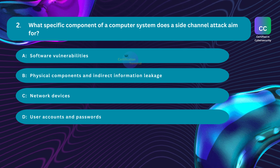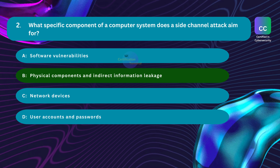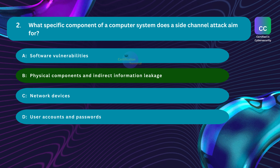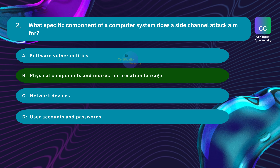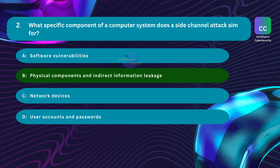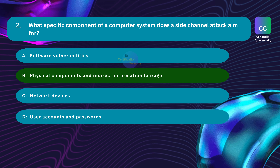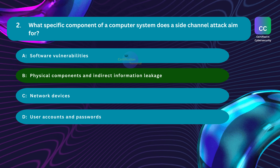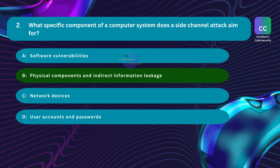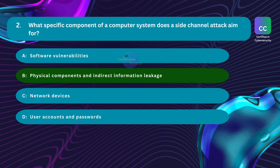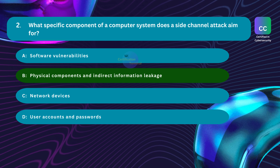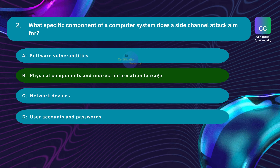The correct answer is Option B: physical components and indirect information leakage. Side-channel attacks are a crafty means of breaching security by exploiting the inadvertent information leakage from a system's physical components. These attacks don't directly target software vulnerabilities but rather capitalize on the unintended side effects of a system's operation, such as power consumption patterns, electromagnetic emissions, or timing discrepancies. They are particularly insidious because they take advantage of the physical properties of hardware or the environment in which a system operates. Addressing these vulnerabilities demands a holistic approach combining hardware-level protections, software defenses, and ongoing research into new attack vectors and mitigation strategies.